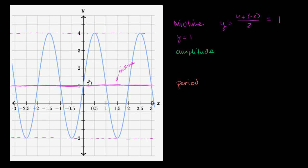So one way to say it is, well, at this maximum point right over here, how far above the midline is this? How far above the midline is this? Well, to get from 1 to 4, you have to go 3 above the midline.